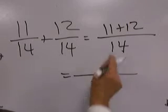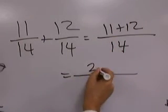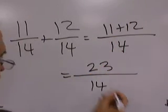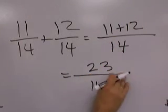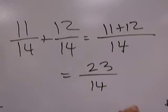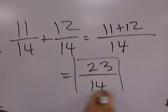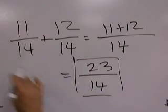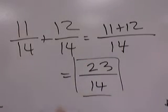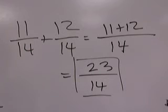The top of this adds to 23 over 14. This could be changed to a mixed number. We can leave it as this, so the result of this addition is simply adding up the numerators.